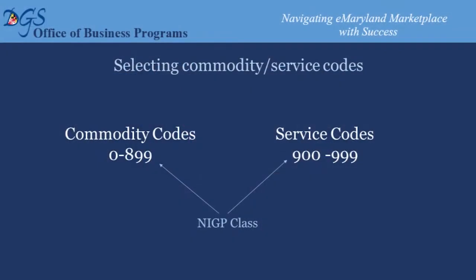One important thing to note: we have a lot of businesses here today — some provide physical products, some perform services. The codes are outlined so that if you perform a service, your codes will begin with 900 and above for the NIGP class. Below 900 indicates a physical product. That should help you narrow down the codes when searching.